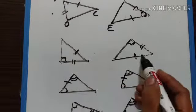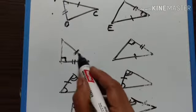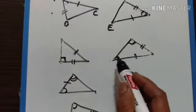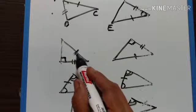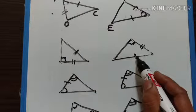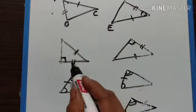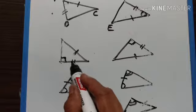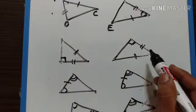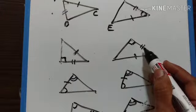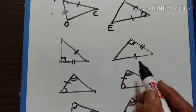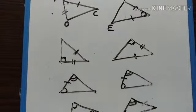In right angle triangles, if the hypotenuse of one triangle is equal to the hypotenuse of another triangle, and one of the perpendicular sides of one triangle is equal to one of the perpendicular sides of another triangle, then these two triangles are said to be congruent.